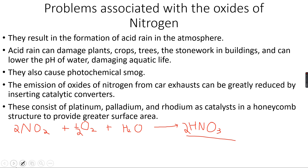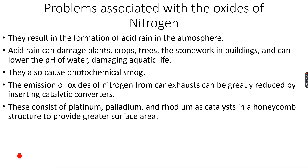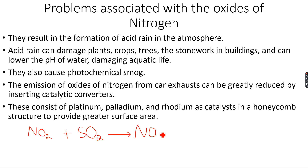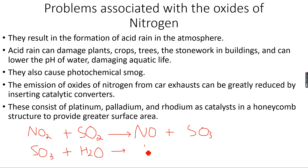This is not a very strong form of acid rain. A stronger form is the formation of sulfuric acid in the atmosphere. That happens when nitrogen dioxide reacts with sulfur dioxide in the atmosphere to give NO plus SO₃ (sulfur trioxide), and SO₃ reacts with moisture to give H₂SO₄ — sulfuric acid. This is a stronger form of acid rain because sulfuric acid is a stronger acid.